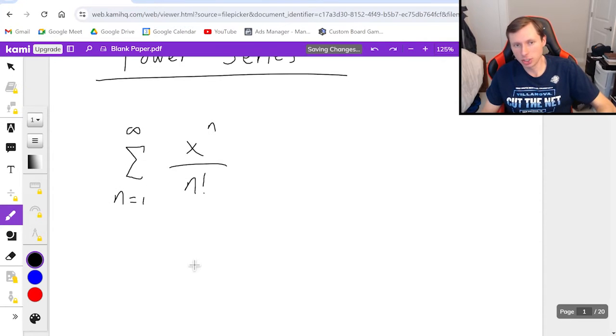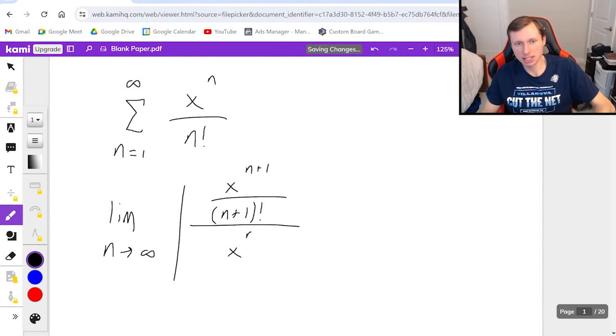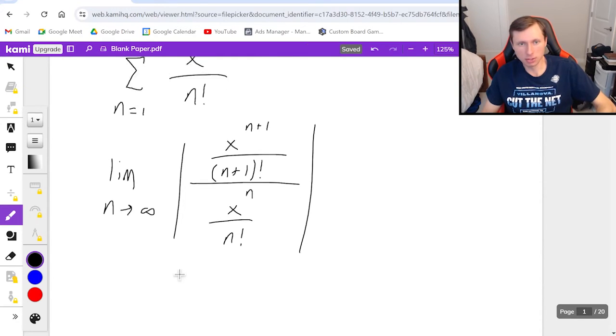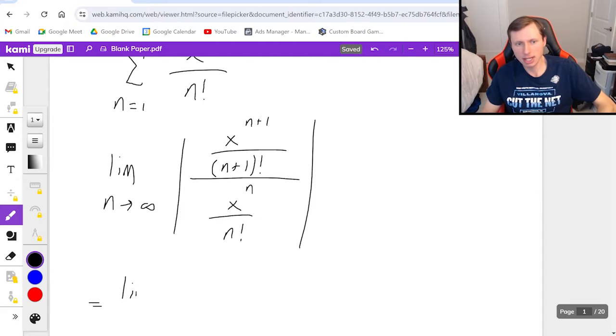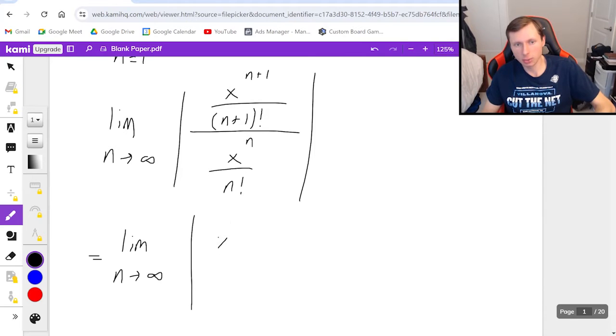So in other words I'm going to use ratio test which remember is the limit as n goes to infinity of the absolute value of the n plus one term in the numerator and in the denominator it's x to the n over n factorial. What I like to do from here is multiply by the reciprocal to make it easier and I'm going to reduce some of these plus ones. For instance x to the n plus one can really be written as x to the n times x to the first and n plus one factorial can be written as n plus one times n factorial.